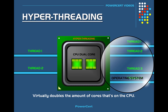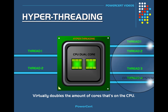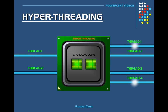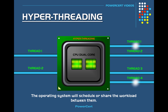Keep in mind that hyper-threading doesn't double the physical cores in the CPU — it only doubles them virtually or logically. Since the operating system recognizes each physical core as two virtual cores, it will schedule or share the workload between them. Each virtual core can be individually interrupted or directed to execute a specific instruction that is independent of the other virtual core.